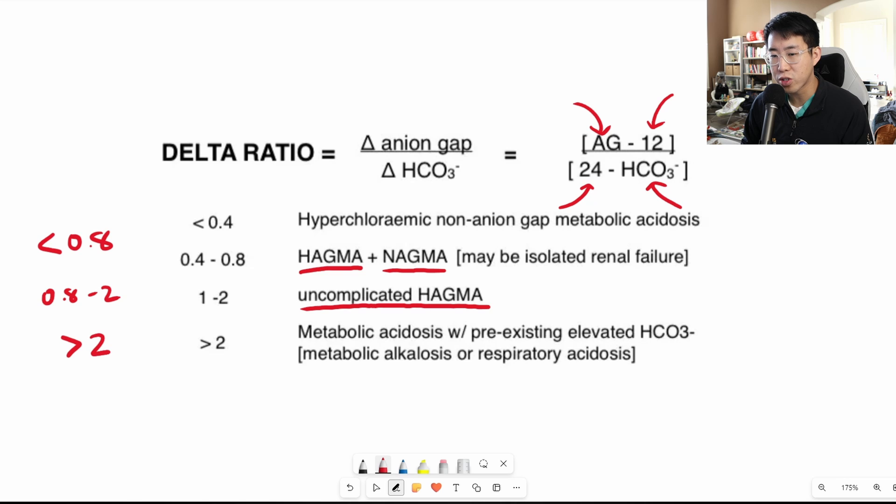And finally, any value greater than 2 is going to tell you that there is both a high anion gap metabolic acidosis as well as a metabolic alkalosis.